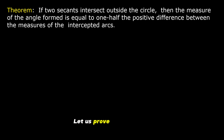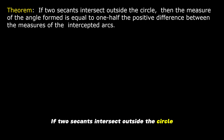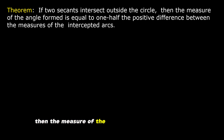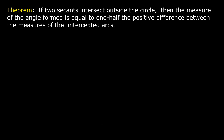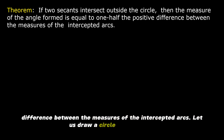Let us prove this theorem. If two secants intersect outside the circle, then the measure of the angle formed is equal to one-half the positive difference between the measures of the intercepted arcs.